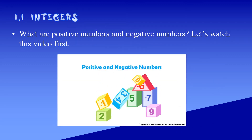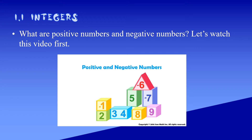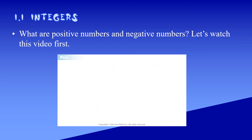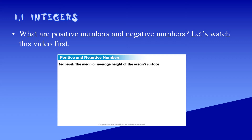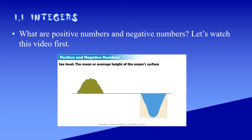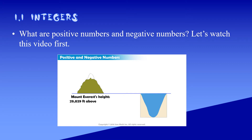Positive and negative numbers. Sea level refers to the mean or average height of the ocean's surface. We use sea level to describe the height of geographical features such as mountains and trenches. Mount Everest, the highest mountain, is 29,029 feet above sea level.